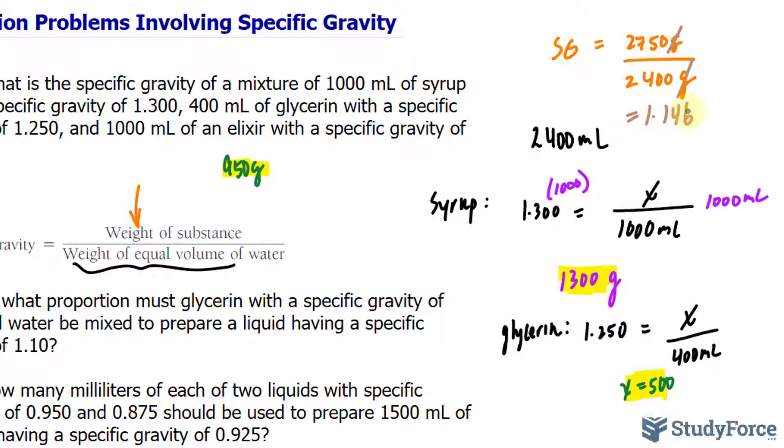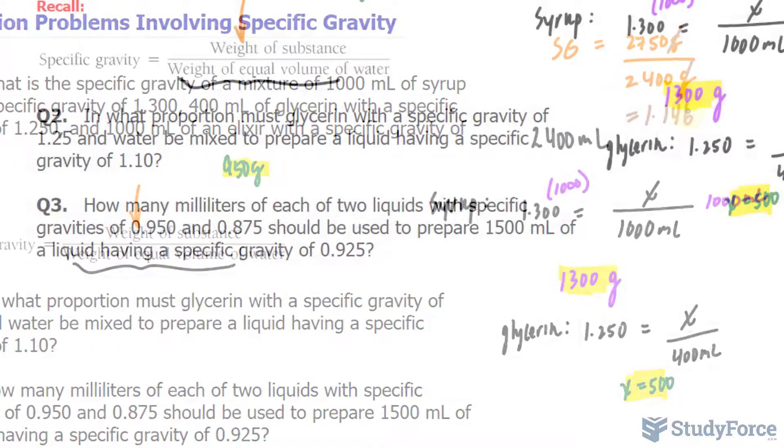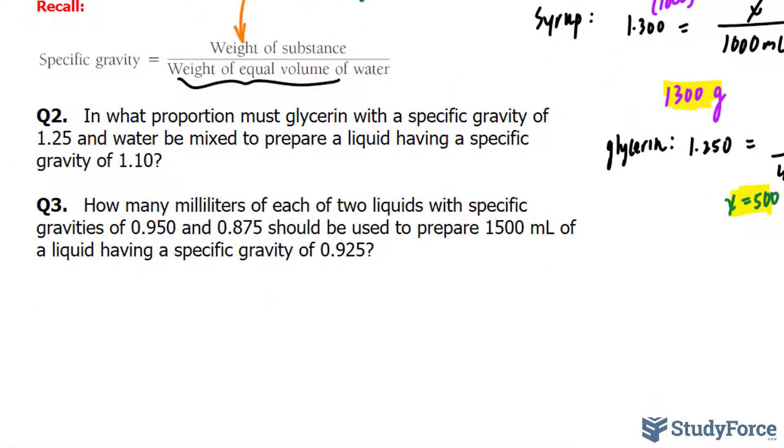1.146 is the specific gravity of these three combined. That is greater than 1, so it's heavier than water, therefore expect it to sink beneath the water. In question number two, in what proportion must glycerin with a specific gravity of 1.25 and water be mixed to prepare a liquid with a specific gravity of 1.10?